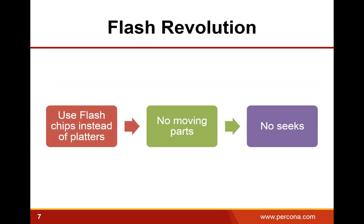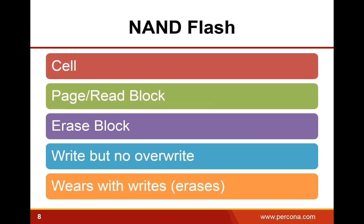The change to flash storage is something akin to a revolution — a very fundamental change in how storage works. Now we're using flash chips instead of a disk platter. There are no moving parts, and no seek time dominating response time. What we use for flash storage is a type called NAND flash, which consists of multiple cells where each cell may hold from one bit for SLC to three bits for TLC, allocated to pages or read blocks. Data on NAND flash has to be accessed in this block-based fashion for reads or writes.